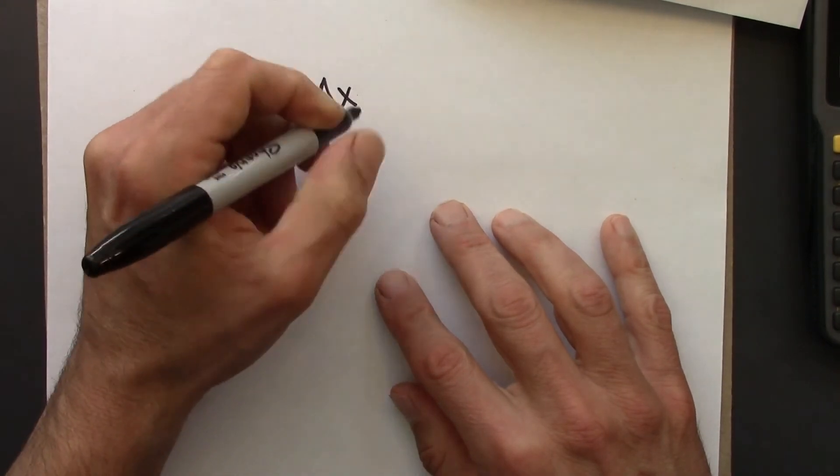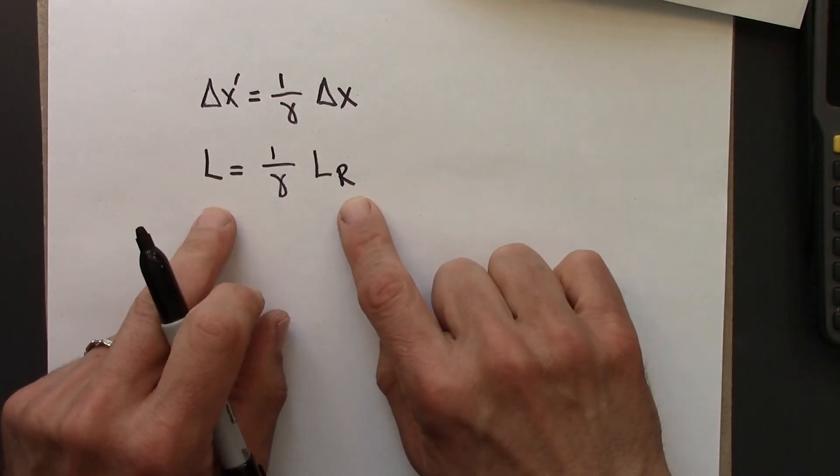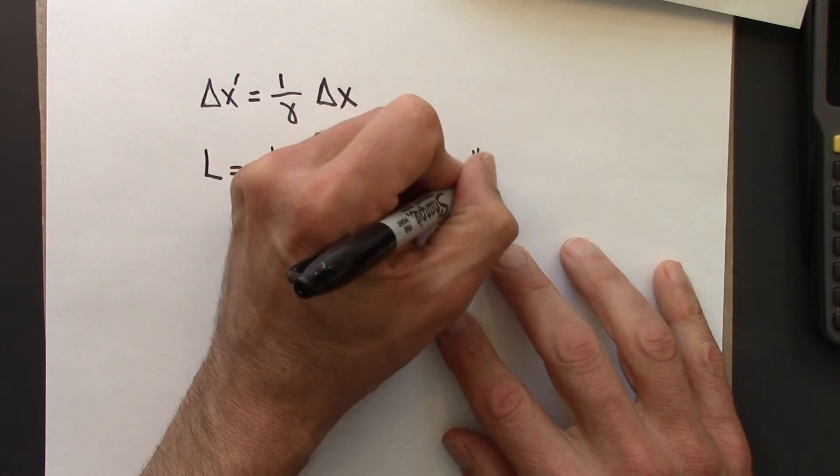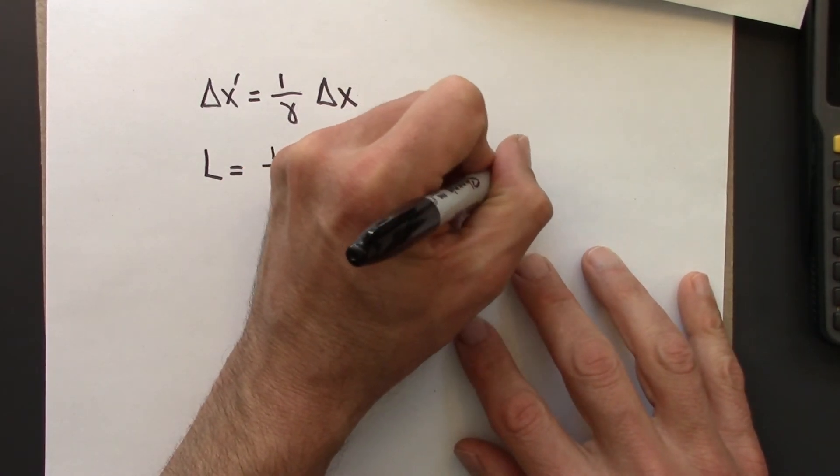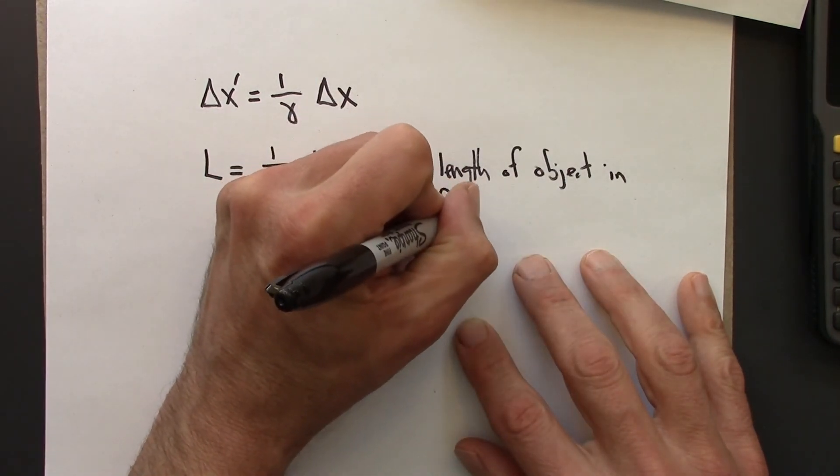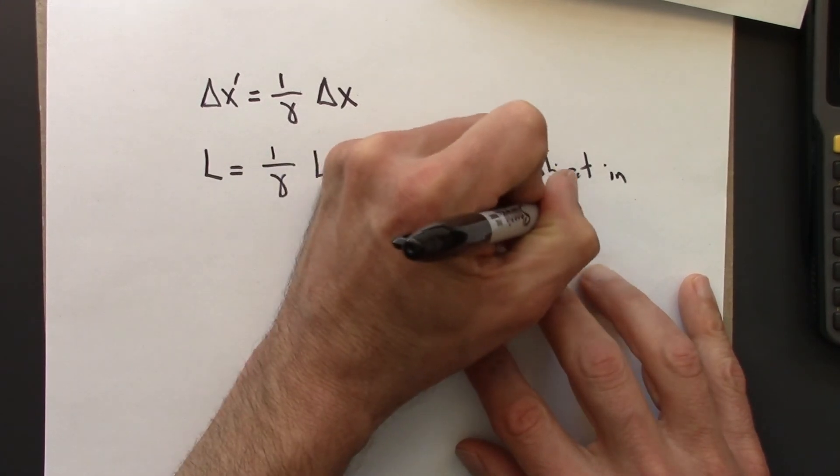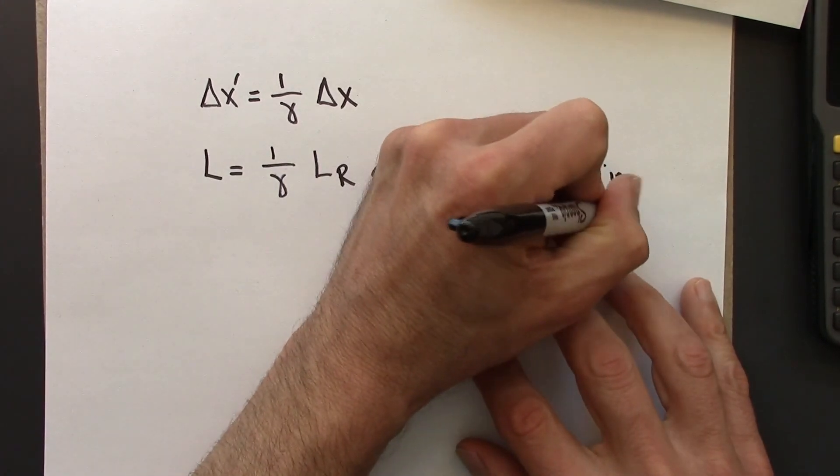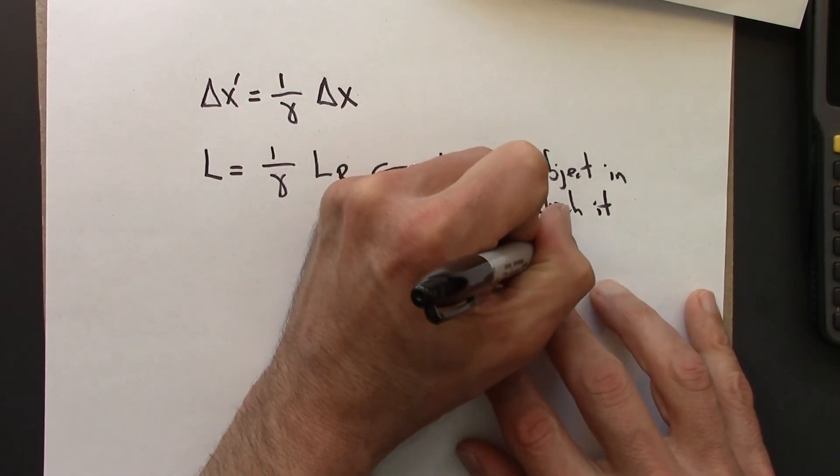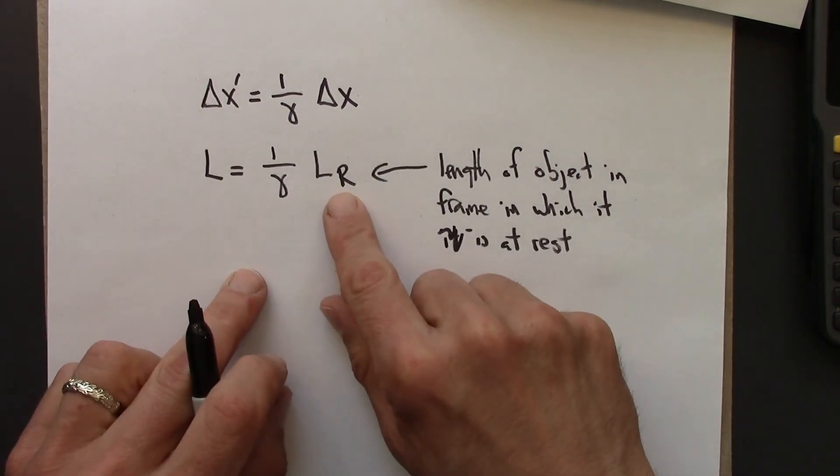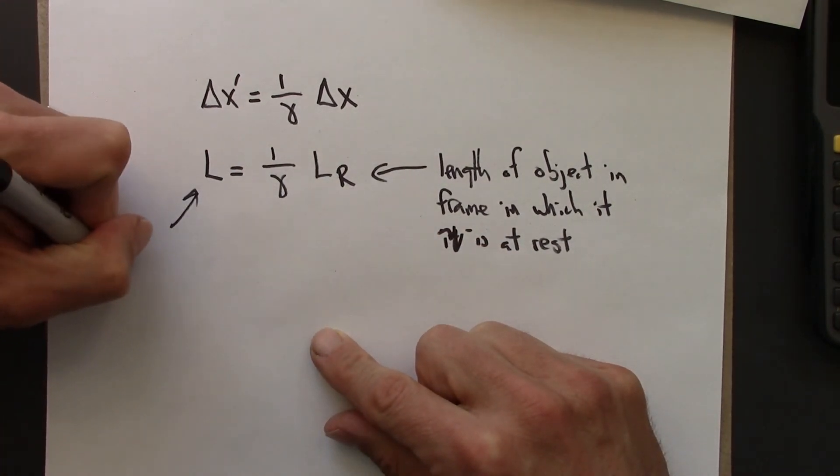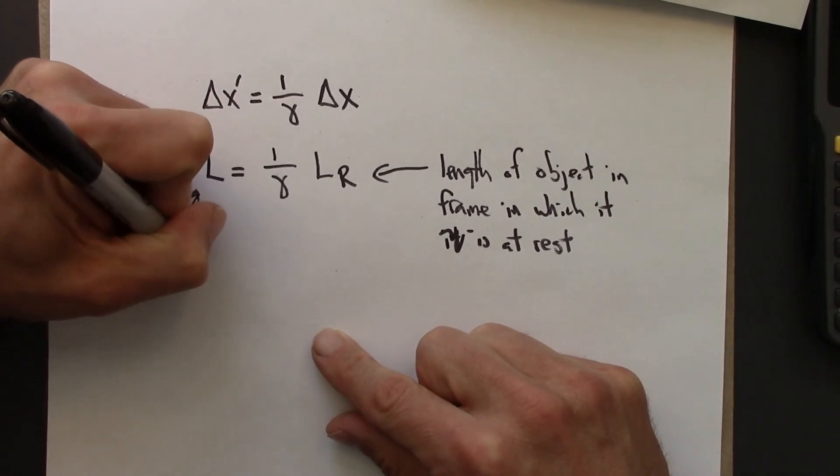And this is L_R for rest length. So this is length of object in a frame in which it is at rest. So L_R is for rest length. And then L would be length in a moving frame.